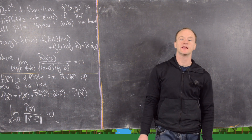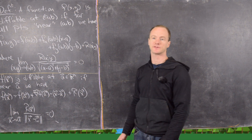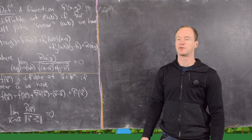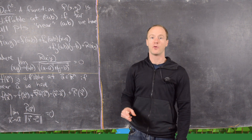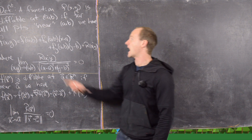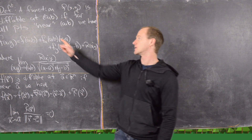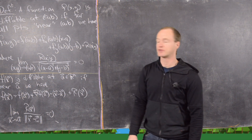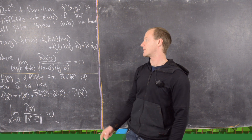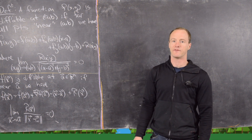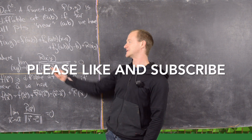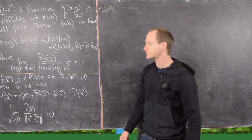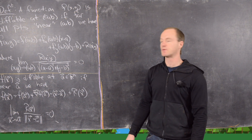Here we're going to look at the notion of differentiability of a multivariable function and give some examples. So let's look at the definition first. A function of two variables x and y is said to be differentiable at (a,b) if, for all points near (a,b), we have: f(x,y) equals f(a,b) plus the partial derivative with respect to x evaluated at (a,b) times (x minus a), plus the partial derivative with respect to y evaluated at (a,b) times (y minus b), plus a remainder function r(x,y). Furthermore, this remainder function satisfies the limit as (x,y) approaches (a,b) of r(x,y) over the square root of (x minus a)² plus (y minus b)² equals zero.